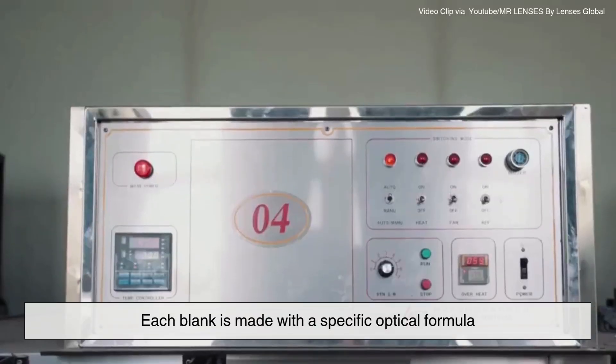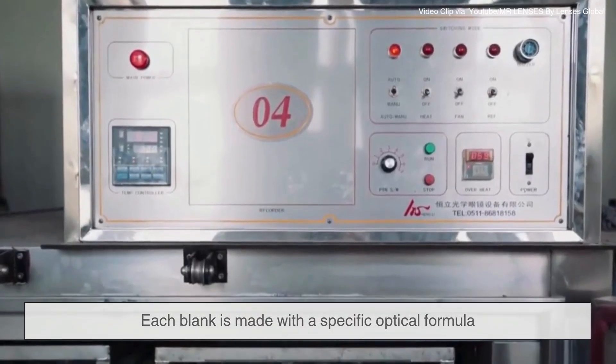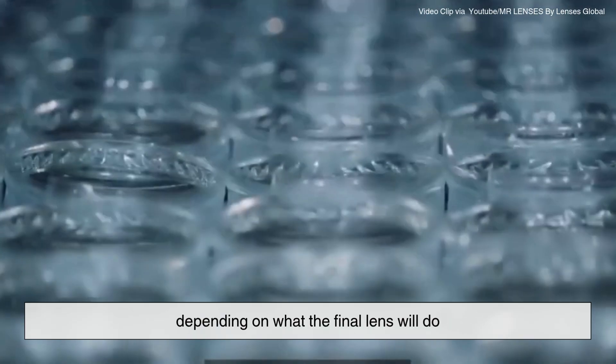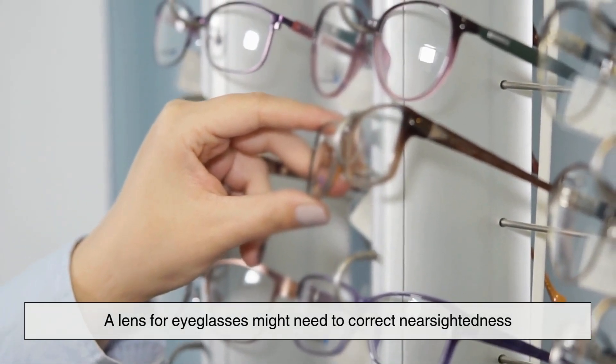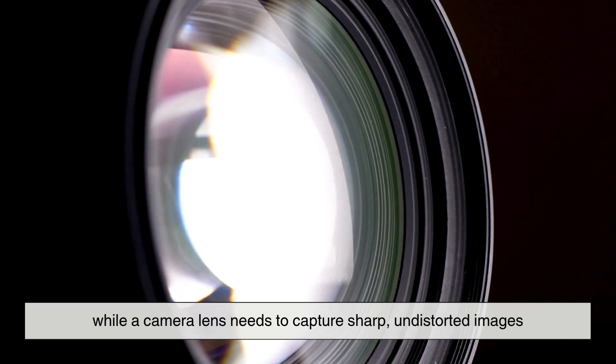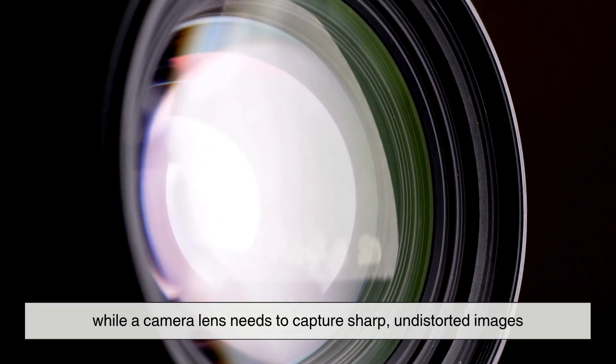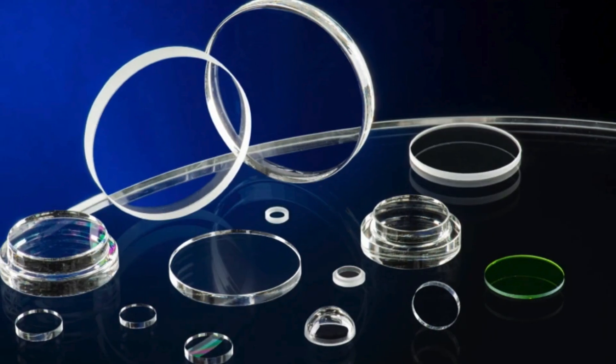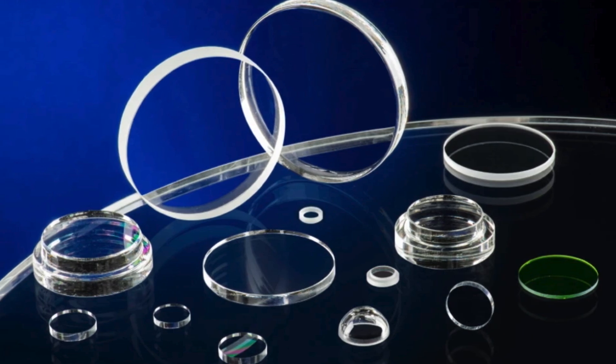Each blank is made with a specific optical formula depending on what the final lens will do. A lens for eyeglasses might need to correct nearsightedness, while a camera lens needs to capture sharp, undistorted images. The materials and formulas are chosen carefully for each purpose.